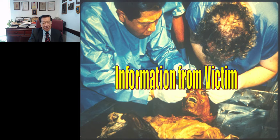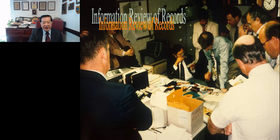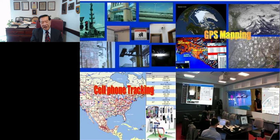Many times, from records, because not every case allows us to go to the crime scene, we can analyze the original documentation. Crime scene information can also come from CCTV cameras, GPS mapping, and cell phone tracking. In the future, real-time crime scene analysis will be possible.